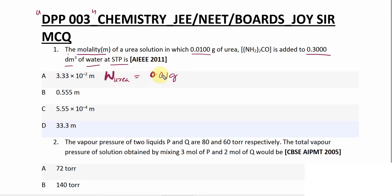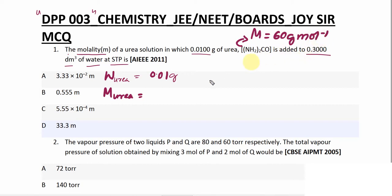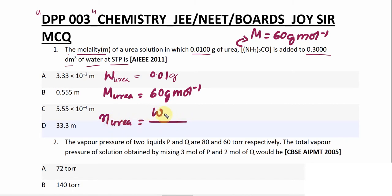The molar mass of urea is 60 gram per mole. Weight of urea is provided, molar mass of urea is provided, so number of moles of urea can be calculated. Number of moles = weight of urea divided by molar mass = 0.01 divided by 60.